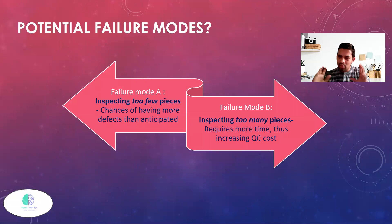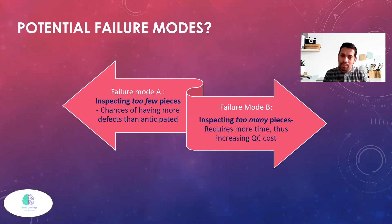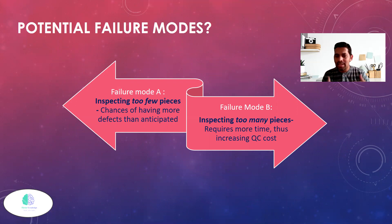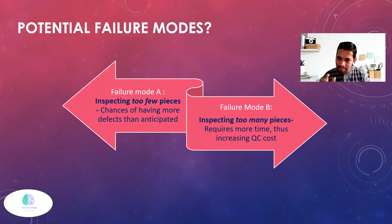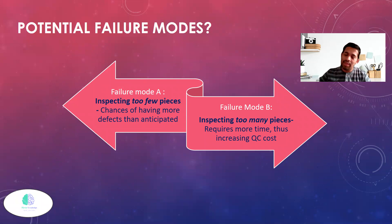There are two failure modes as far as sampling is concerned. The first is inspecting too few pieces. If you do that, the failure mode is the chance of having more defects than anticipated. For example, you're supposed to take 500 samples for 40,000 pieces, but you've only taken 50. There's a chance that defects exist in the uninspected pieces and can escape detection.